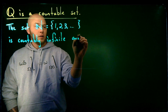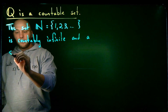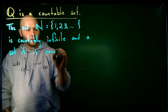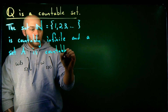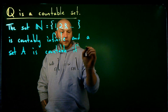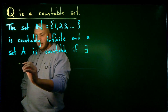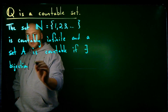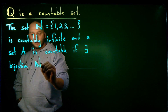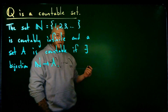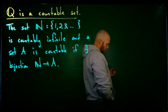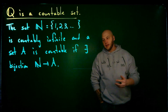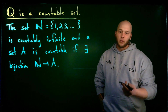A set A is countable or countably infinite if there exists a bijection from N to A. So if there's a bijection between the set of counting numbers and A, we say that the set A is countable, or in other words, countably infinite.